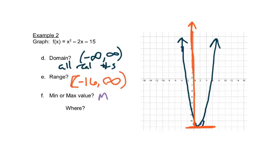It has a minimum value, and that's y equals negative 16. That's at the vertex. That's the smallest value. And it happens at, when it says where, at x equals 1. That's because that's the other part of the vertex. So the minimum value is the y part of the vertex, but the where is the x part of the vertex.